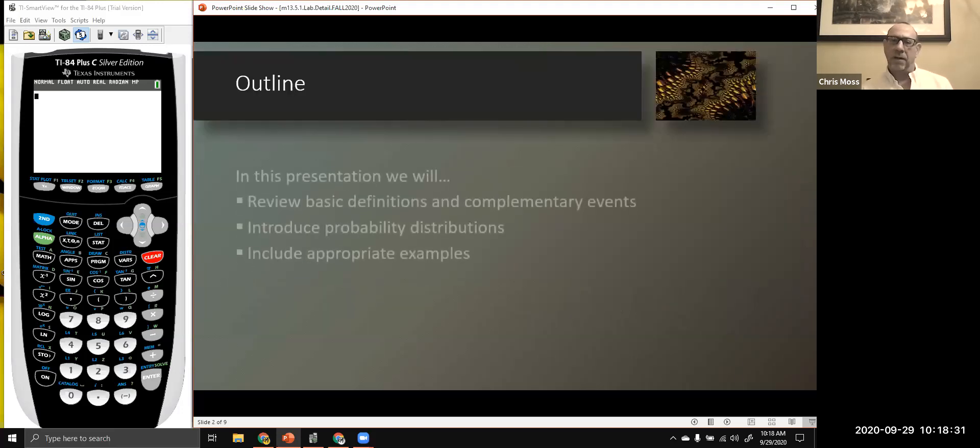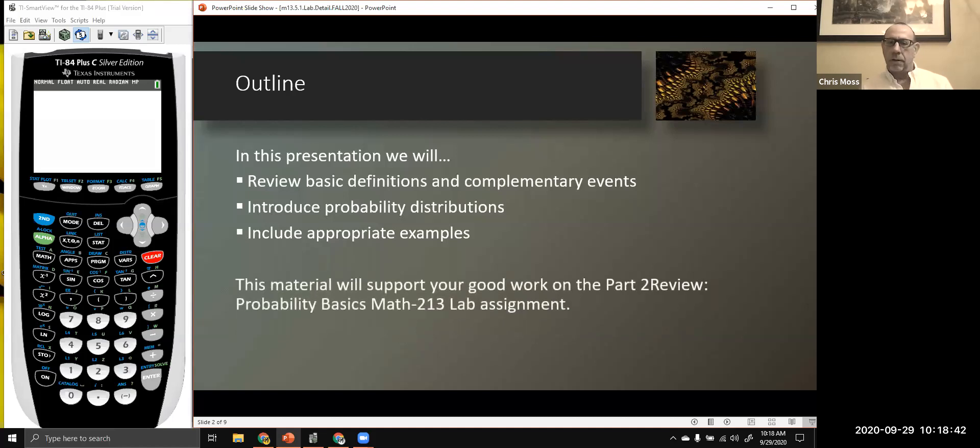Let's take a look at this in terms of an outline. We're going to review basic definitions and complementary events, introduce the notion of a probability distribution and include some basic examples. This is going to support your good work in the part two review, probability basics in your Math 213 lab assignment.